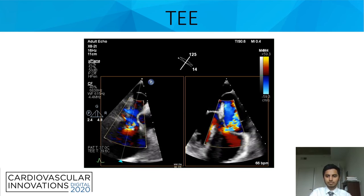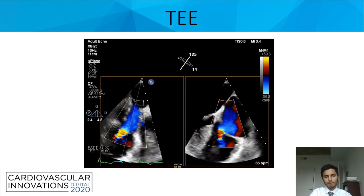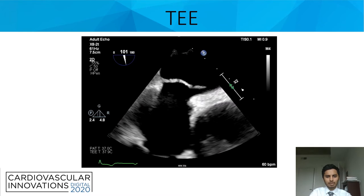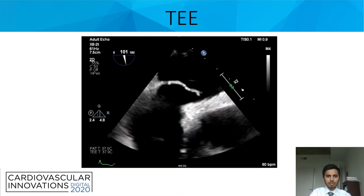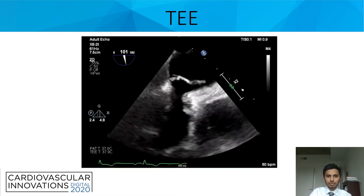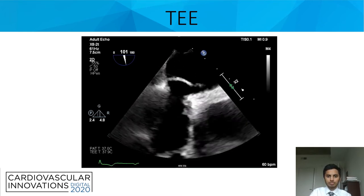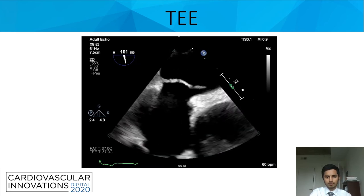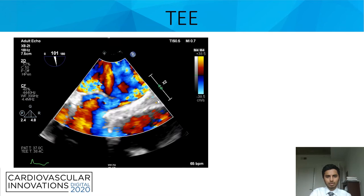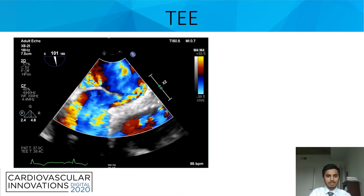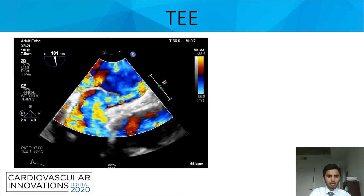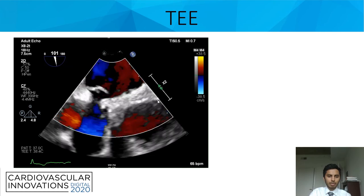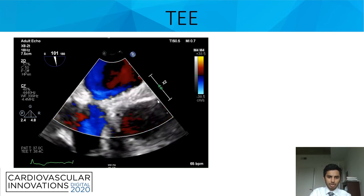And finally, we can now see the interatrial septum — the aneurysmal interatrial septum. Here we can see significant flow across the PFO, and the Doppler is suggestive of bidirectional shunting.